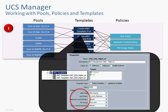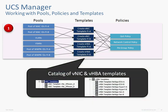On the VNIC template, as an example, you give it a name, you assign it to a fabric — Fabric A or Fabric B — and you have the option to enable failover for the individual virtual NIC. Then you tell it which MAC pool to use, QoS policy to use, network control policy, and pin group. Once you've done that across a range of virtual NICs and virtual HBAs, you end up with a catalog of connectivity options that your service profiles can start to use.